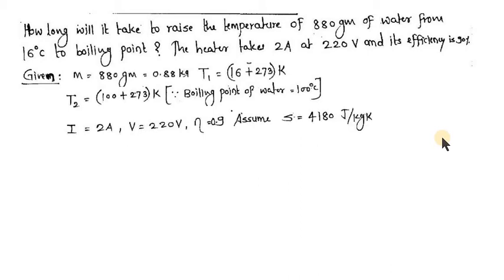While using the formula for sensible heat, we need the value of s, the specific heat capacity of water. Since the substance is water, specific heat capacity s equals 4180 joule per kg per kelvin. Now we will solve the problem.